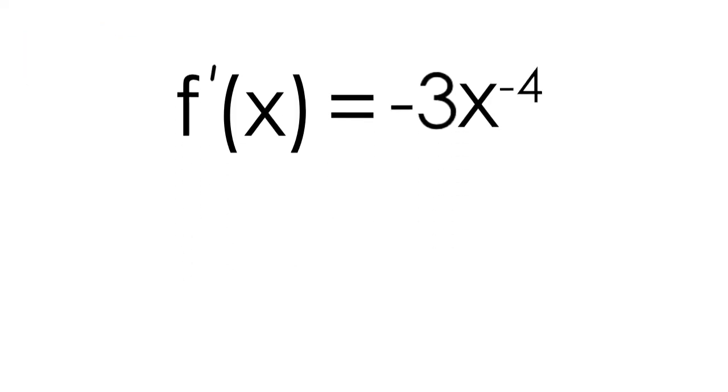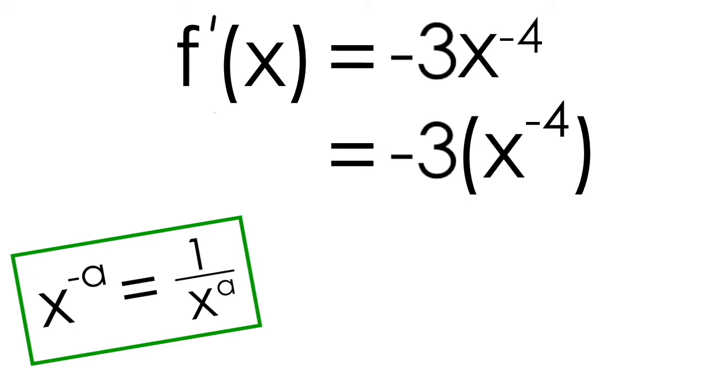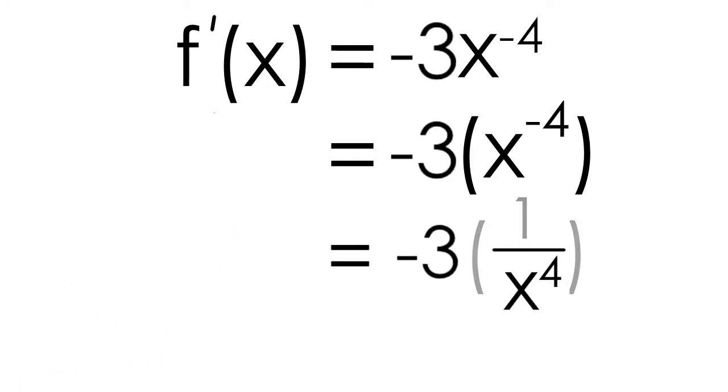While this technically is the derivative of 1/x³, we usually like to write our powers with positive exponents. So I'm going to use that exponent law from earlier in reverse to take x^(-4) and rewrite it as 1/x^4. I can multiply the -3 into the brackets, resulting in -3/x^4.